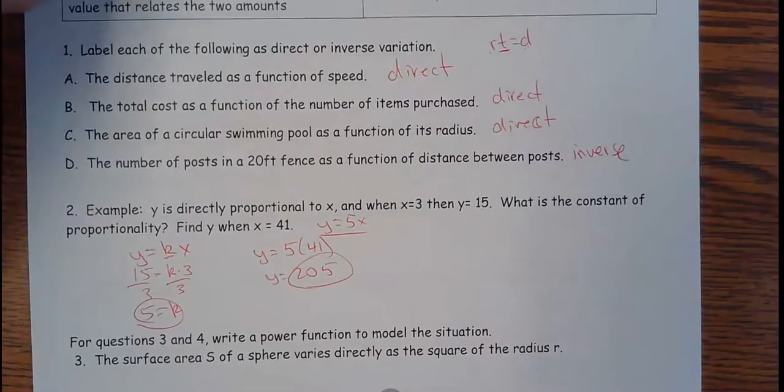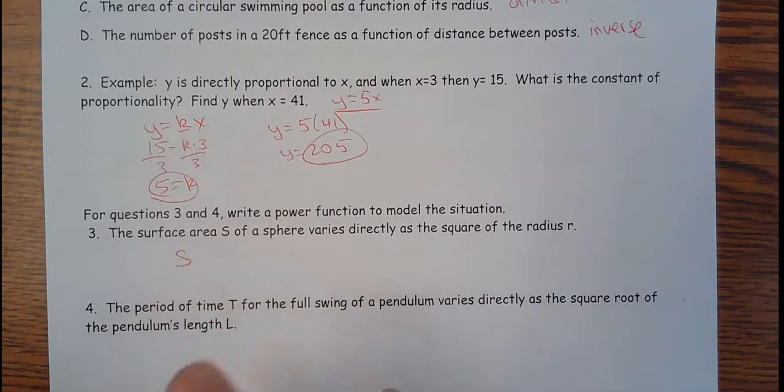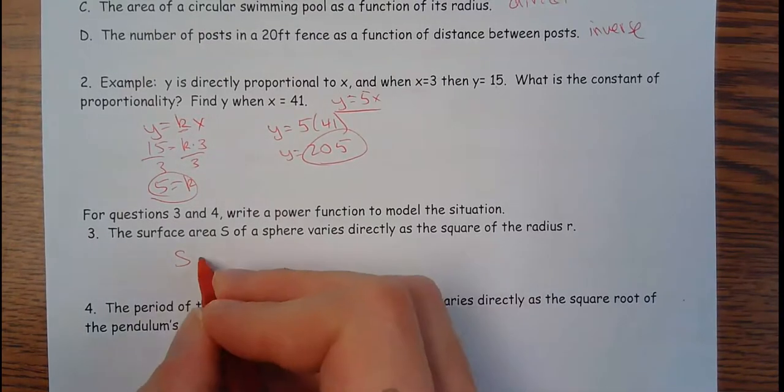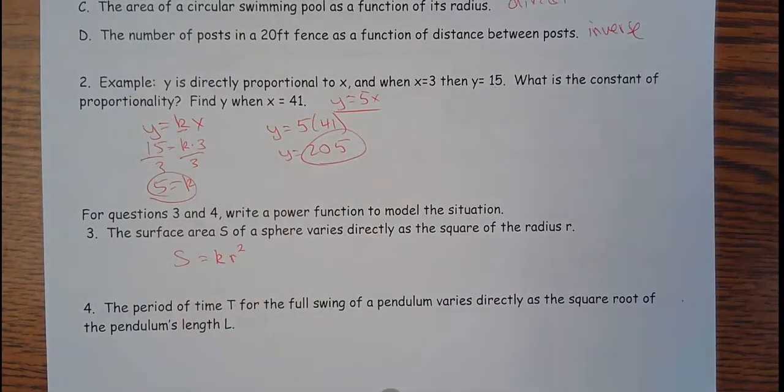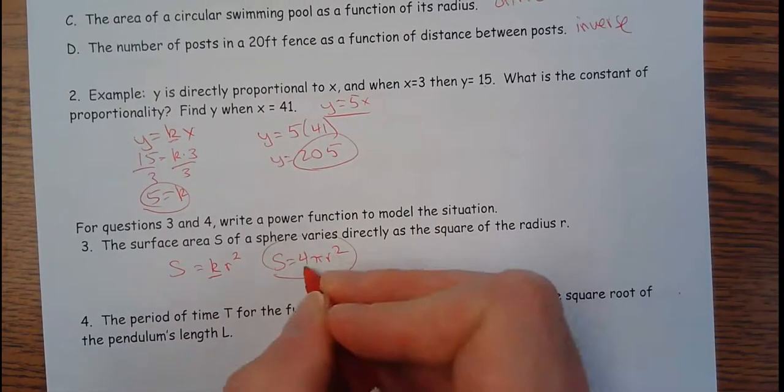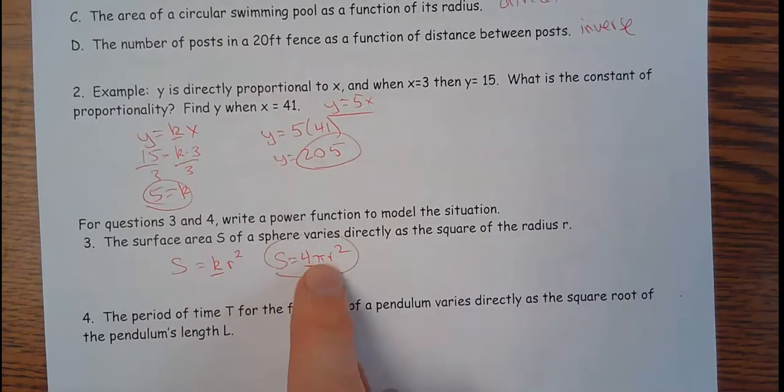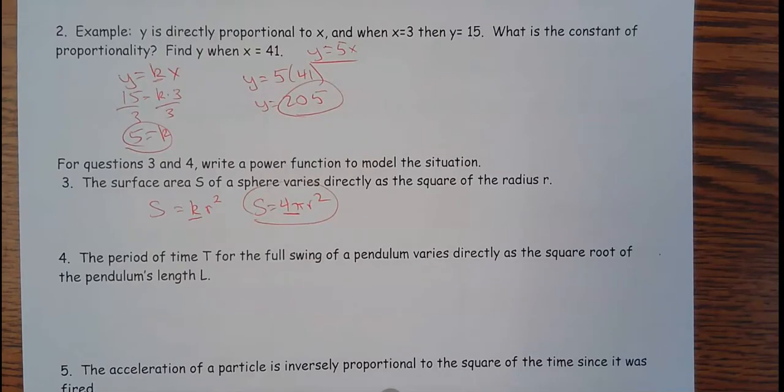For questions 3 and 4, write a power function to model the situation. The surface area, s, of a sphere varies directly as the square of the radius. So it's going to equal k times the square of the radius. Now, if you happen to remember this from geometry, what is that k? It's 4 pi. If you happen to remember that, notice 4 pi is a constant. There's no variables in there. That's the thing that if you multiply the r squared by, you get the surface area. As the radius goes up, the sphere surface area goes up.